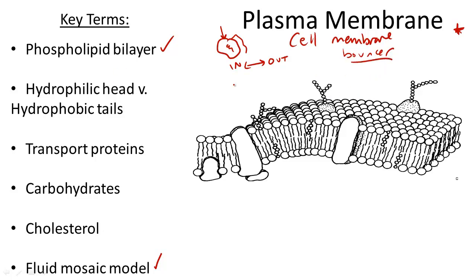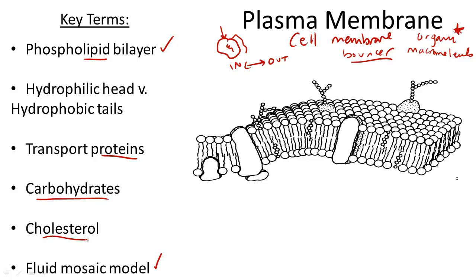What's cool about the structure of a plasma membrane is that it requires every organic macromolecule that your body consumes and produces. This includes lipids, proteins, carbohydrates, and cholesterol. Let's review the key terms in the structure of a plasma membrane, as it directly relates to its function.